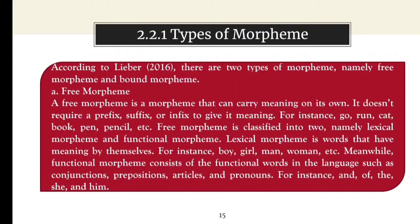Free morpheme is classified into two, namely lexical morpheme and functional morpheme. Lexical morpheme consists of words that have meaning by themselves, for instance: boy, girl, man, woman, etc. Meanwhile, functional morpheme consists of the functional words in the language such as conjunction, preposition, articles, and pronouns, for instance: and, of, the, she, and him.